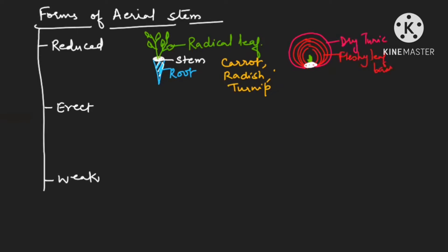This gives rise to adventitious roots. You can imagine — keep your onion in the kitchen for some time and you will find adventitious roots coming from it. Later on, the bud will grow and give rise to a leafless shoot, and on top it will bear an umbel inflorescence. This leafless shoot is known as a scape.